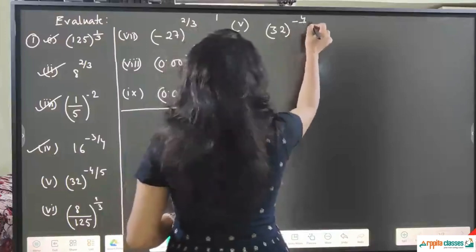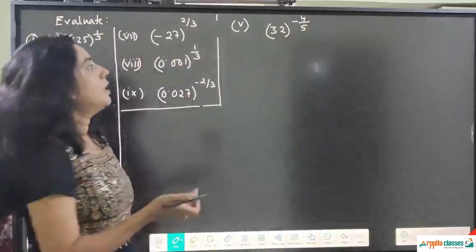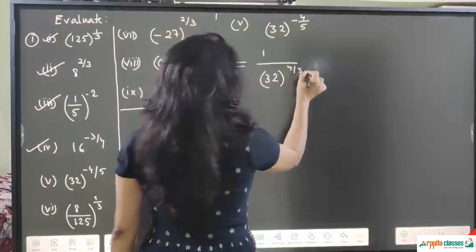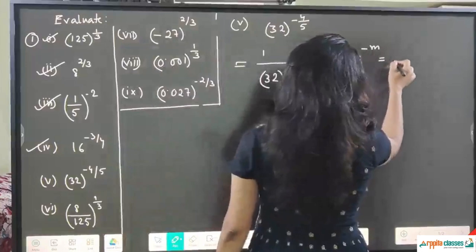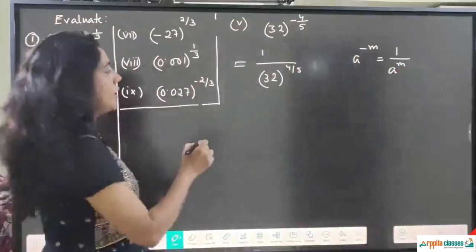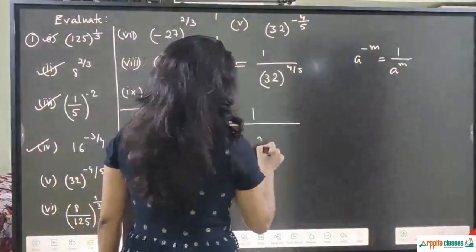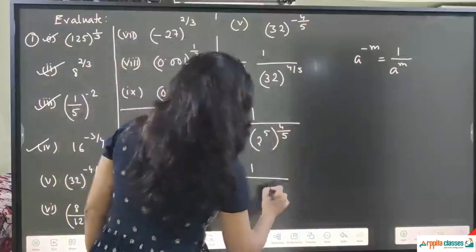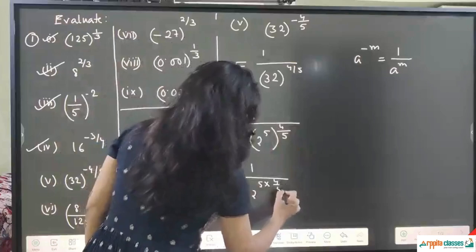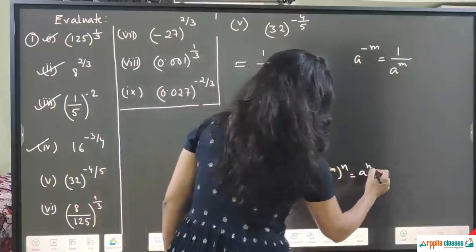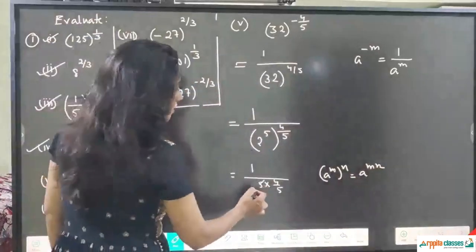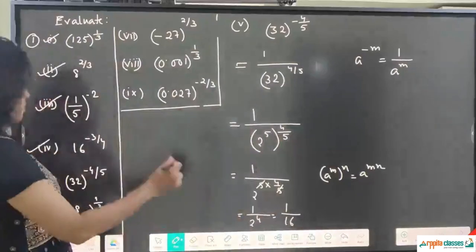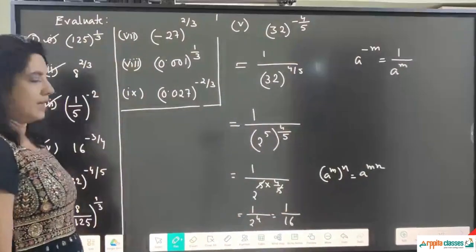Question 5 is 32 to the power minus 4/5. First make the power positive: 1 upon 32 to the power 4/5, using a to the power minus m equals 1 upon a to the power m. Now 32 = 2⁵, so it becomes 1 upon (2⁵) to the power 4/5. Applying a to the power m whole to the power n equals a to the power m × n, the 5s cancel, giving 1 upon 2⁴ = 1/16.